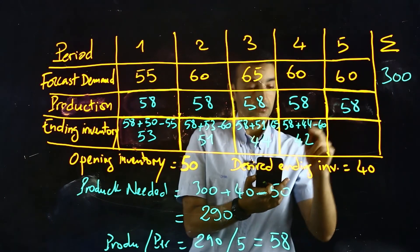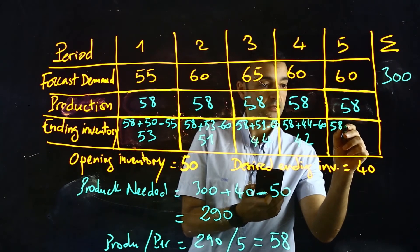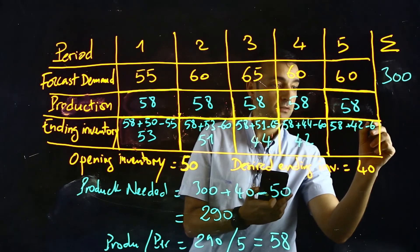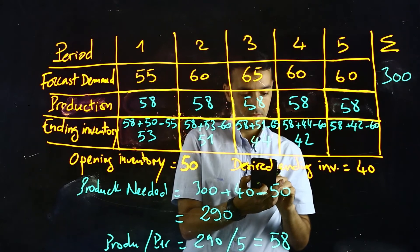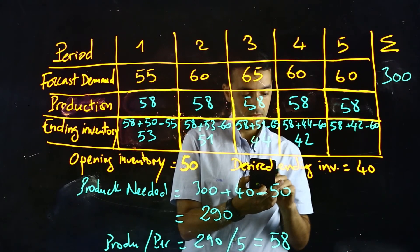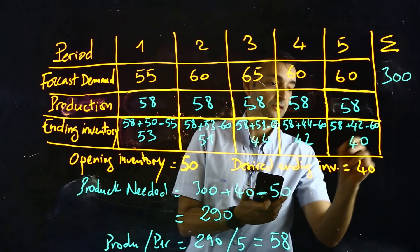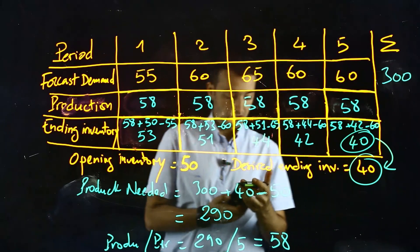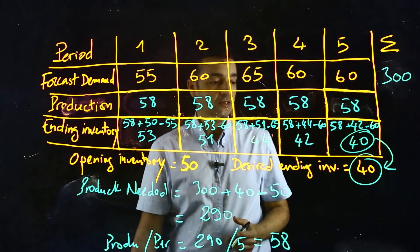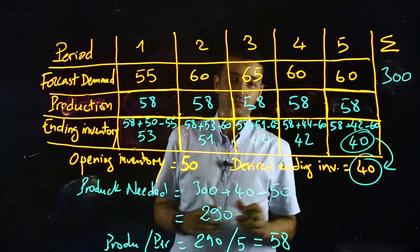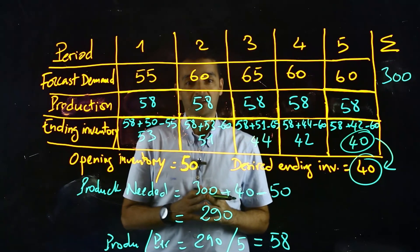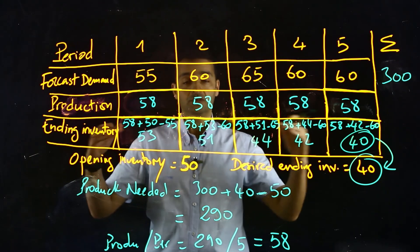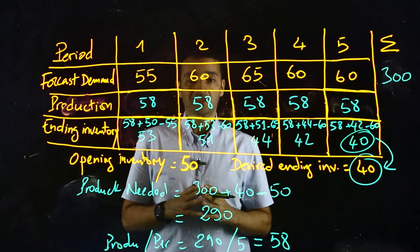For the last period: 58 plus 42 minus 60, and the result is 40 units. So we have the same result for the ending inventory accumulated over five periods. This is an example of how to calculate the ending inventory when you use a level production strategy in an MTS environment.